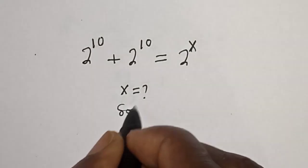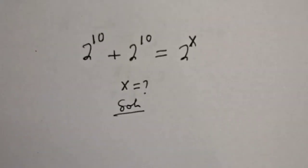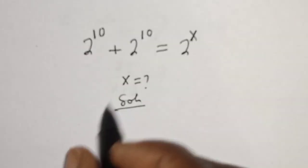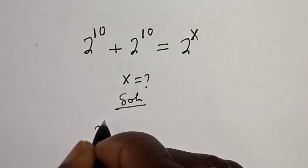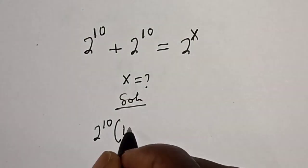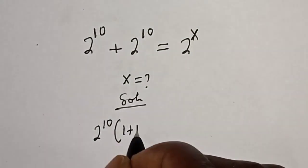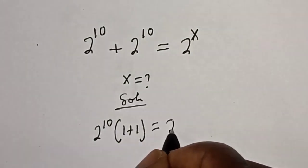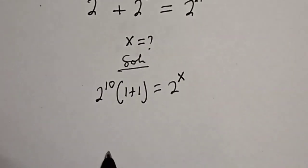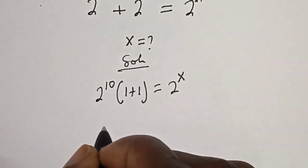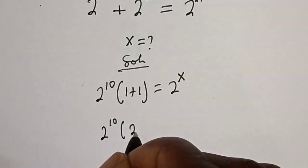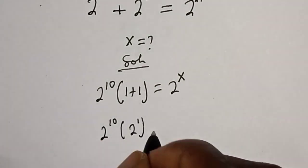Solution: from here, 2 raised to power 10 is common — let's bring it out. We have 2 raised to power 10, bracket: this divided by this is 1, plus this divided by this is 1, is equal to 2 raised to power x. Then this is 2 raised to power 10 times 2 raised to power 1, is equal to 2 raised to power x.